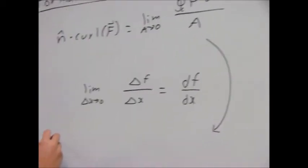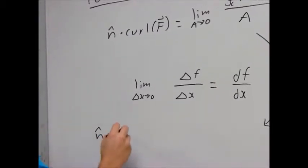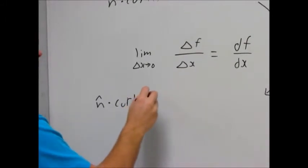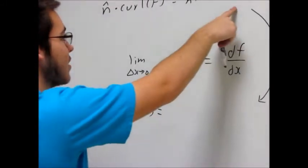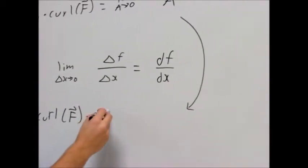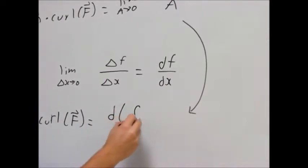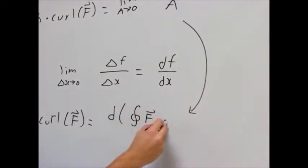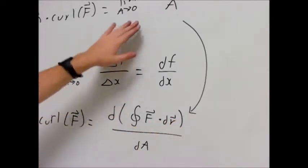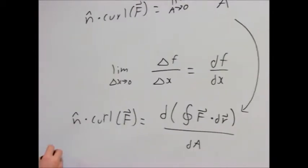And so we have n dot curl f. So this is kind of like a derivative. Not exactly, this is not a formal proof, but this is sort of some intuitive way to view the theorem. So we say this derivative with respect to A.